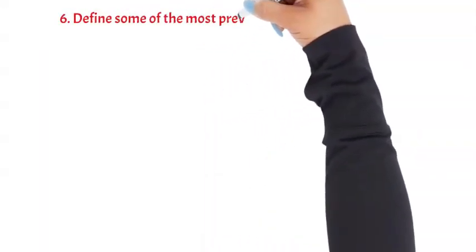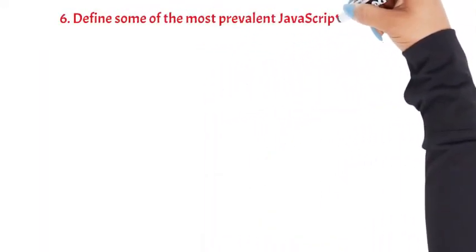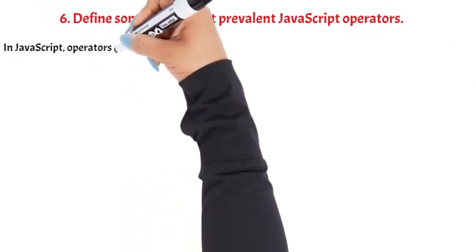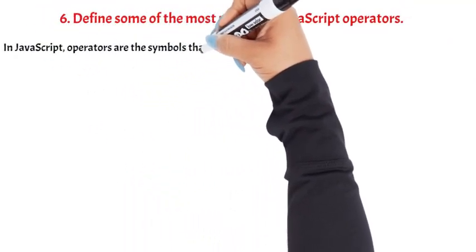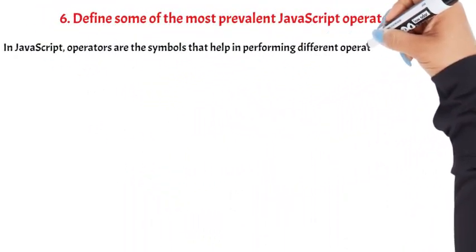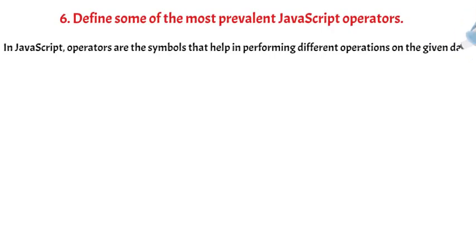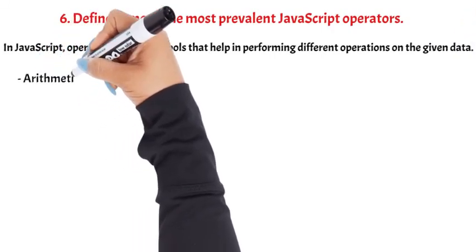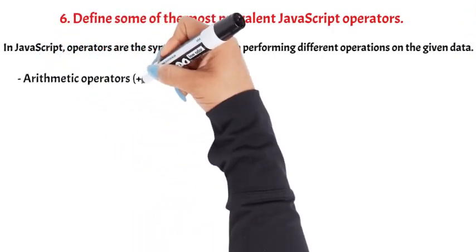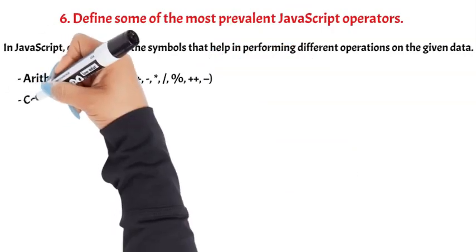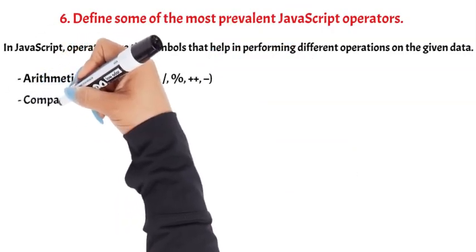Question 6: Find some of the most prevalent JavaScript operators. In JavaScript, operators are symbols that help in performing different operations on given data. Arithmetic operators: +, *, /, %, ++. Comparison operators: ==, ===, !=, !==, <, >, >=, <=.